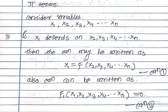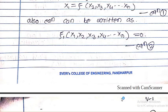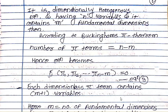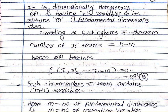The functionality equation can be written as: x1 is equal to a function of x2, x3, x4 up to xn — this is equation number 1. Also, the equation can be written as f(x1, x2, x3, x4, ..., xn) = 0, because the equation is dimensionally homogeneous so 0 is written on the right side — that is equation number 2. It has n variables and m fundamental dimensions.